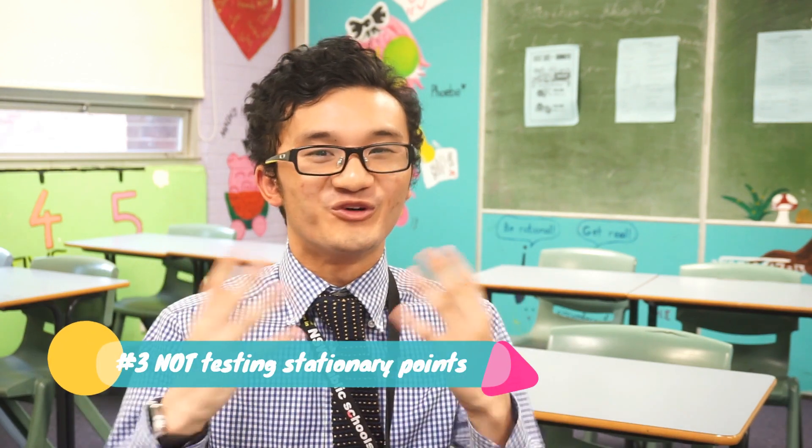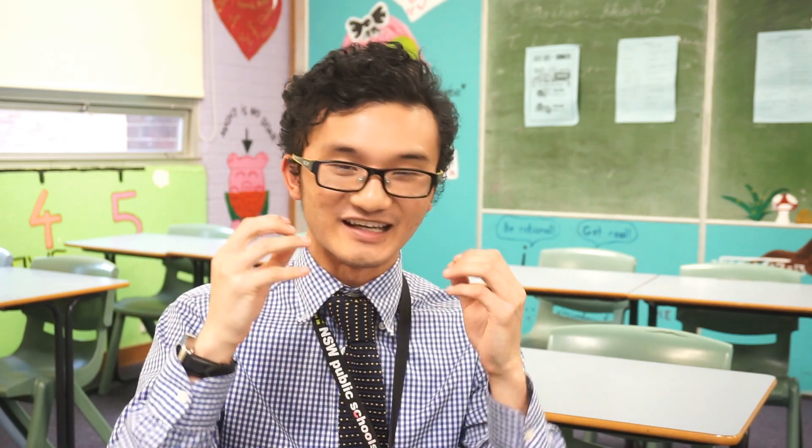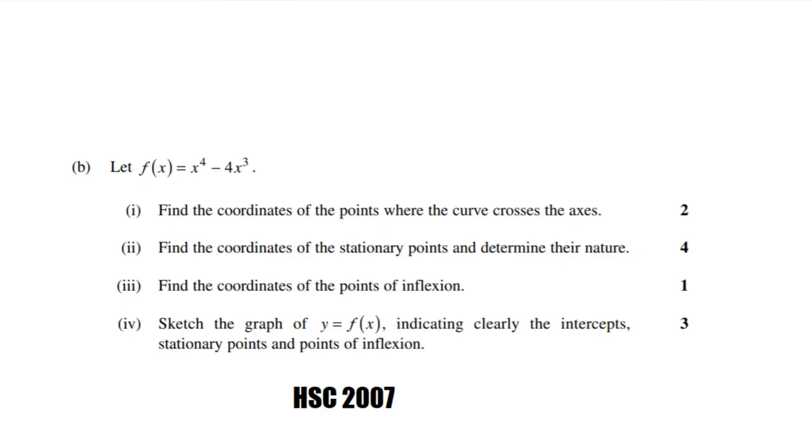Not testing stationary points or inflection points. I can't tell you the countless number of times I've seen exam papers where students have confidently proclaimed that this is a maximum or this is a minimum, but they haven't tested using a table of values or the second derivative method. It's really important that we test those values — not only because they're worth marks in the exam, but also when doing trickier questions like curve sketching, it will actually affect the graph that we create. For example, this question here — we're asked to find the coordinates of stationary points and determine their nature, and it's very important that we test so we know what the graph is going to look like.